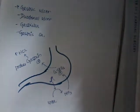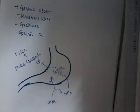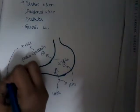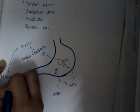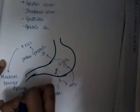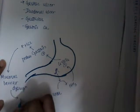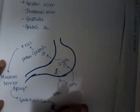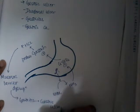So where does H. pylori get infected? It can get infected in the fundus or in the antrum — anywhere in the stomach. But wherever it gets infiltrated, it will disrupt the mucosal barrier. Because of increased HCL, there is mucosal barrier disruption, which leads to gastritis and ulcer formation, and eventually gastric ulcer.